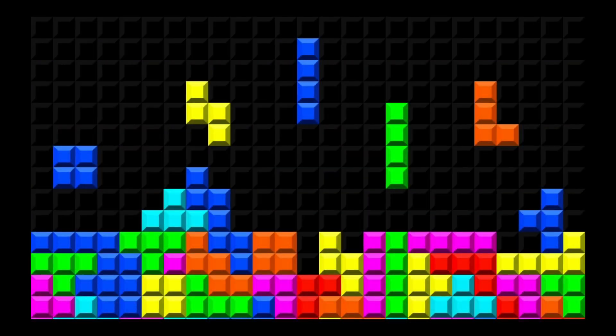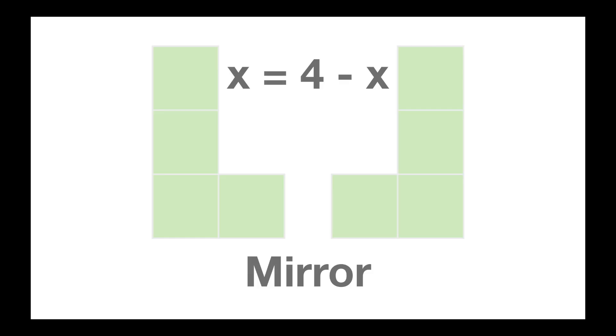Let's look at some of the types of manipulations that we're going to want to do to a set of points. The first few of these are going to help us set up the rotation problem. So if we want to rotate something 90 degrees clockwise, we need to be able to do a couple of smaller operations.